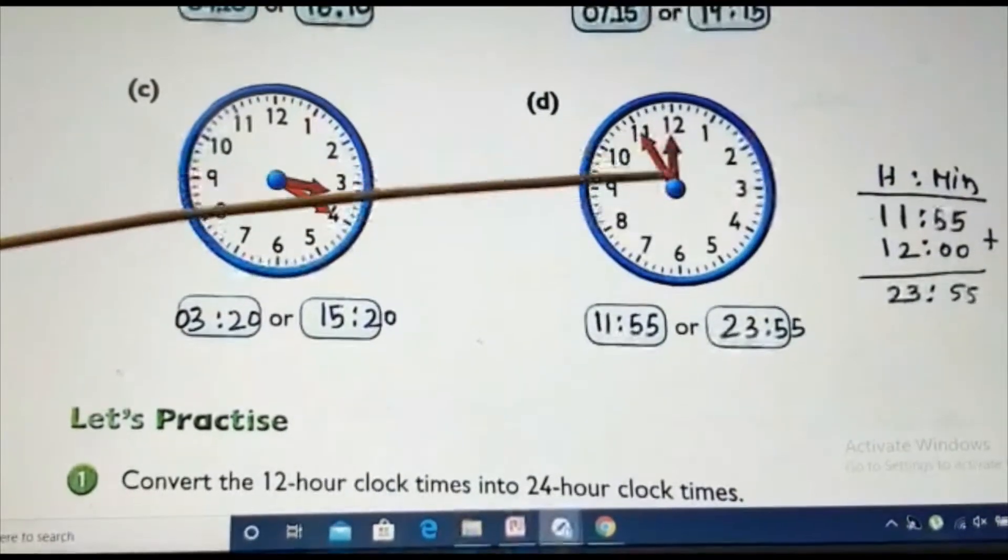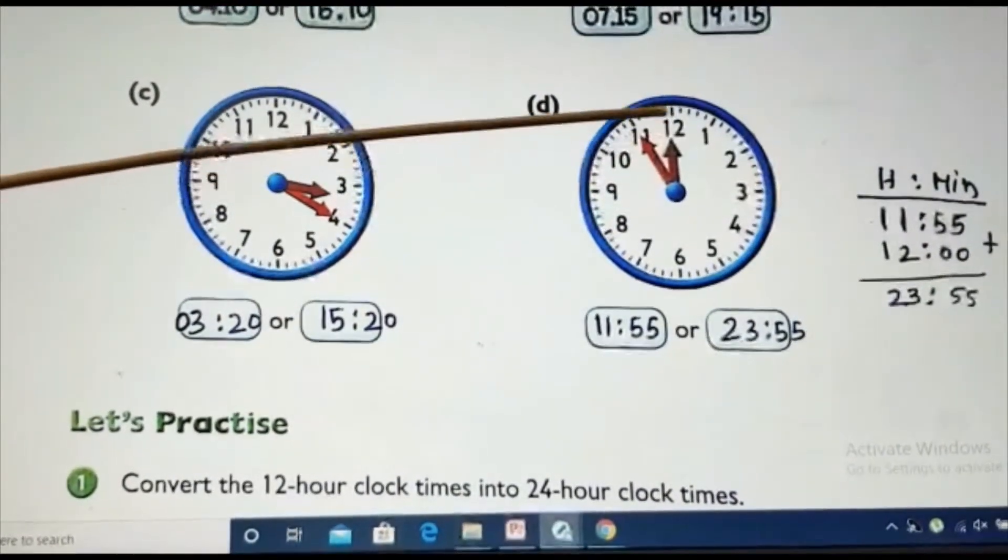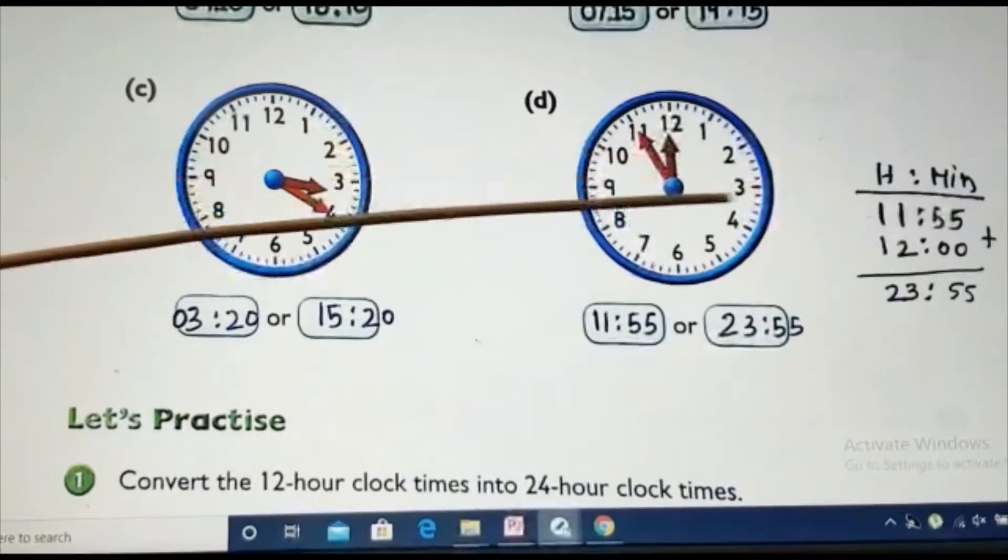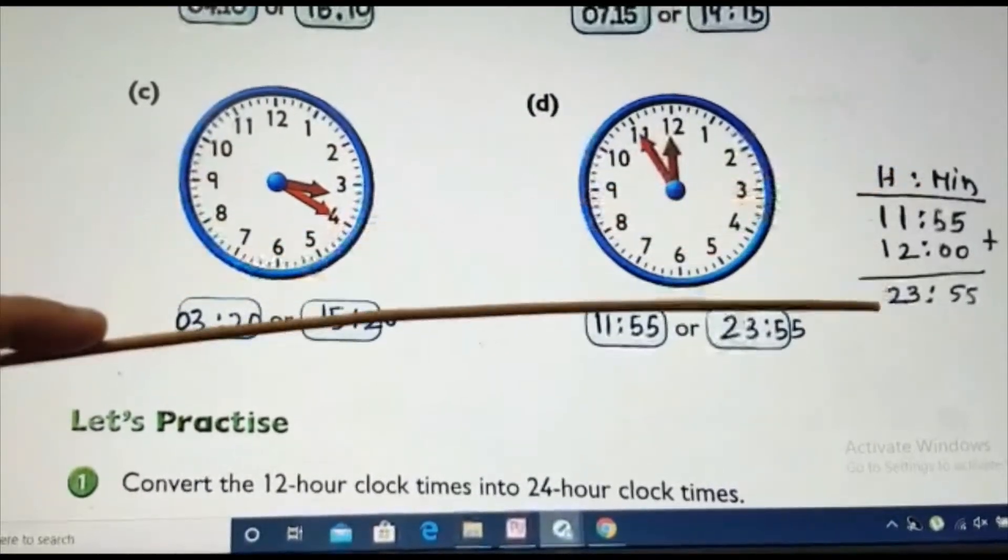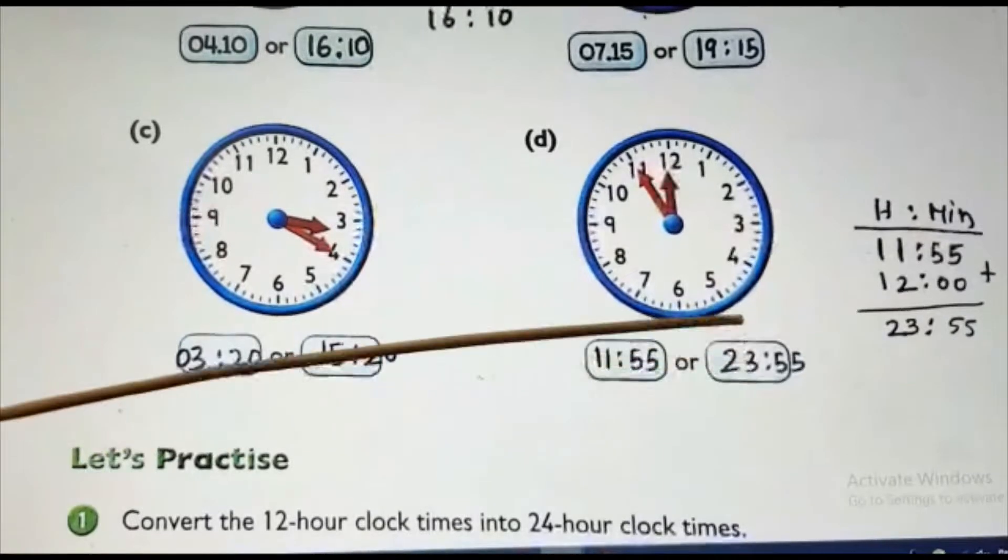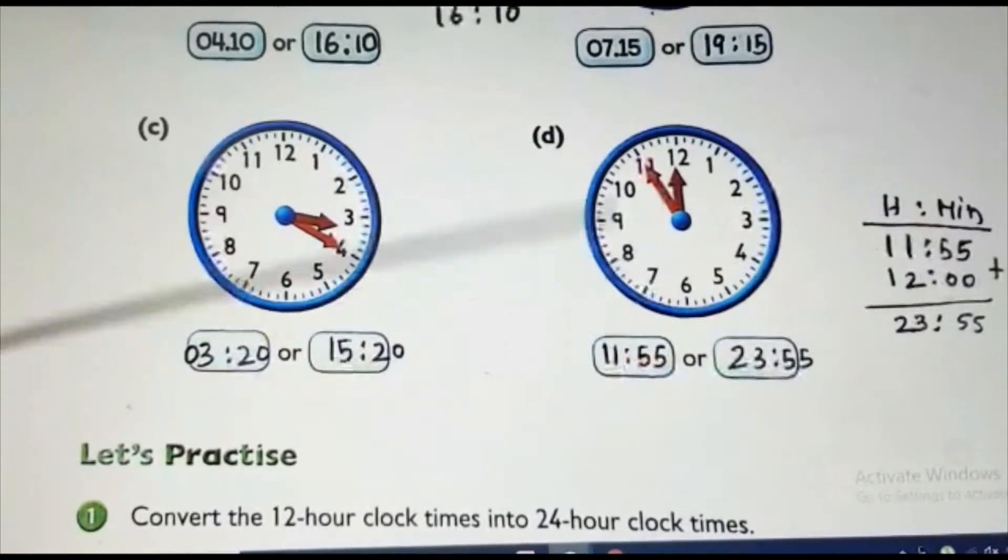Look here. What is the time? It is 11:55. Five minutes more to 12. So, what we should do? We will add 12. So, it is what? 23:55. This is PM time and this is the AM time in the 24 hour clock. Okay.